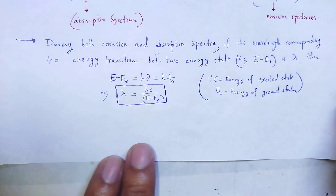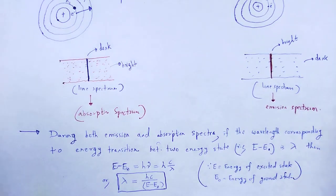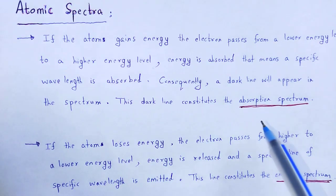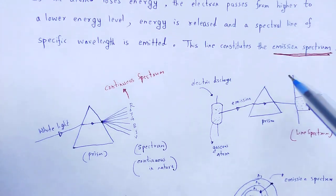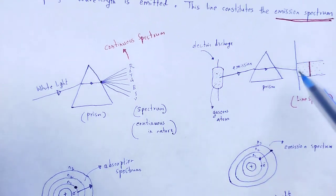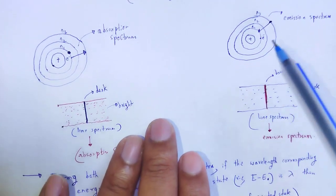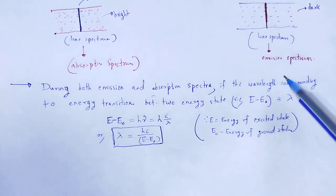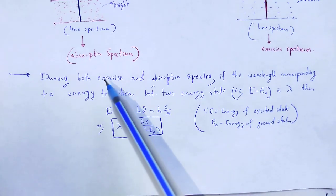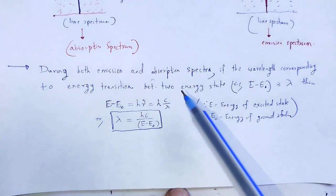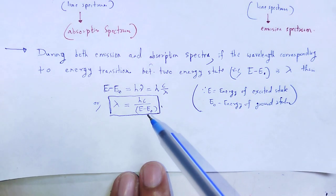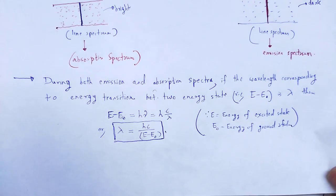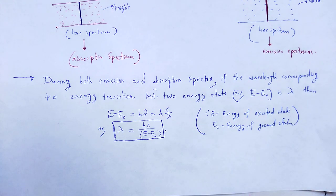So the wavelength of line spectra is calculated using that particular expression. With the help of this video lecture you understand the concept of atomic spectra — what is absorption spectrum and emission spectrum — and finally the mathematical calculation for the wavelength expression. So with these useful and informative notes, let me wind up the session. Thank you.